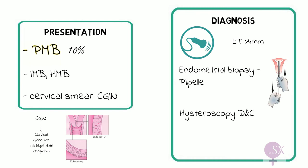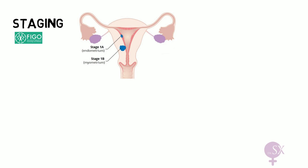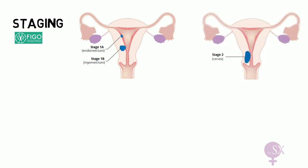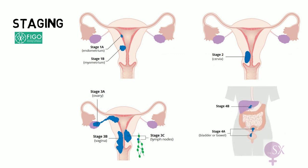Once endometrial cancer is confirmed, we stage the patient and perform imaging such as a chest X-ray and MRI. Staging uses the FIGO system. Stage 1: lesion confined to the uterus — 1a is less than half of the myometrium involved, 1b is more than half invaded. Stage 2: spread to the cervix but not beyond the uterus. Stage 3: spread beyond the uterus — 3a involves the serosa or adnexae, 3b involves the vagina and possibly parametrium, 3c1 involves pelvic nodes, and 3c2 involves para-aortic nodes. Stage 4a: spread to the bladder or bowel; stage 4b: distant metastasis.